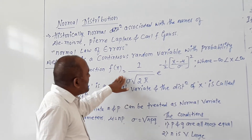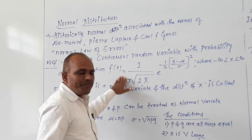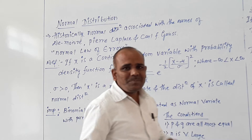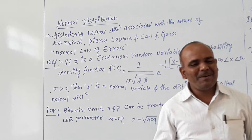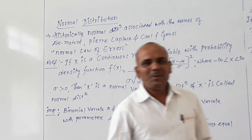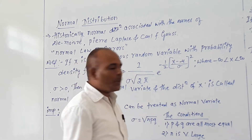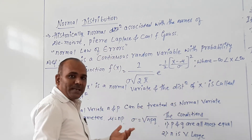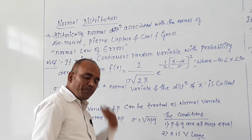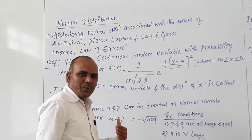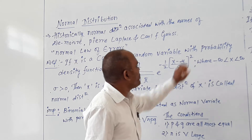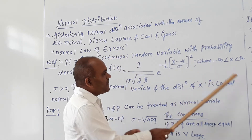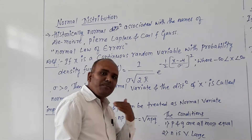The probability density function f of x equals 1 divided by sigma times the square root of 2π, into e raised to minus one-half times open bracket x minus mu, whole square divided by sigma squared. The range of x is from minus infinity to plus infinity.